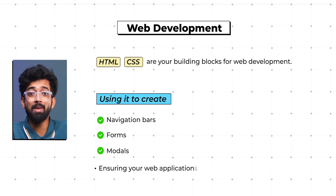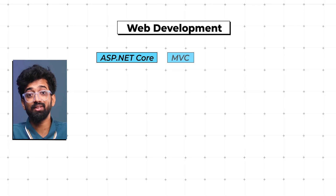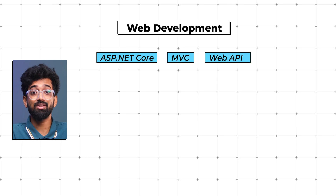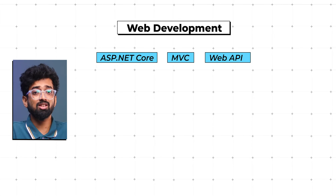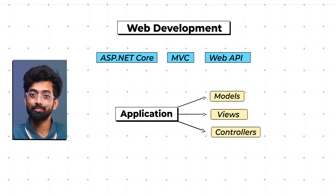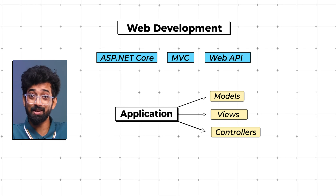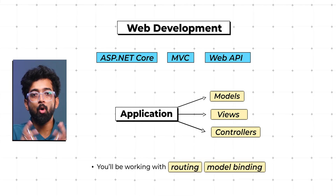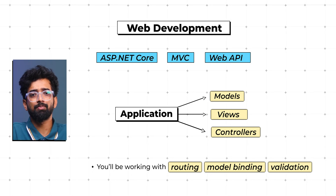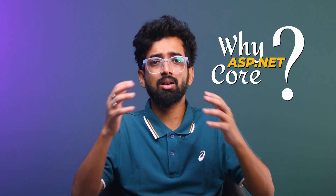On the back end, ASP.NET Core MVC is your go-to framework. It's all about separating your application into Models, Views, and Controllers. ASP.NET Core makes it easy to create robust applications and APIs. You'll be working with routing, model binding, and validation to build powerful and secure web services. It's a cross-platform, modern framework perfect for creating scalable and high-performance applications.